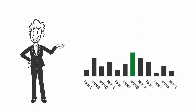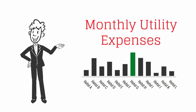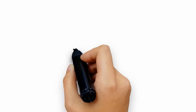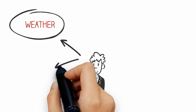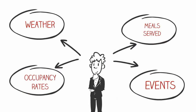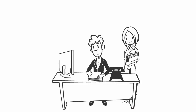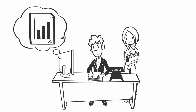All hotels have monthly utility expenses, but some are more efficient at using these resources than others. From hotel experience, David knows that there are many factors that affect the utility usage within a hotel, including weather, occupancy rates, meals served, events, etc. He also knows that before he can make good decisions on which hotels are in need of his attention, he has to look at all his properties equally to find problems which, if fixed, could return savings, increase profits, and increase the value of the property.